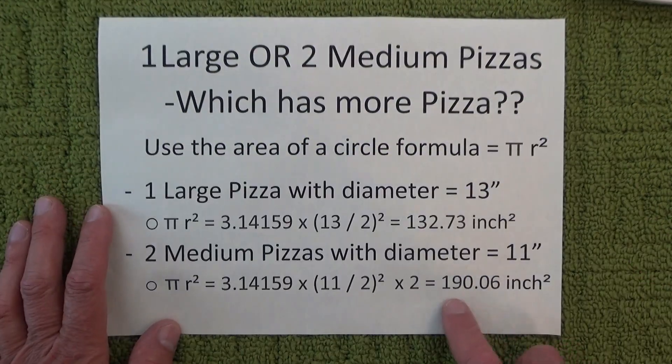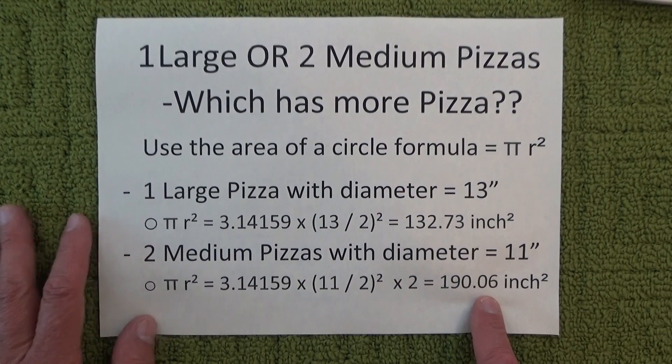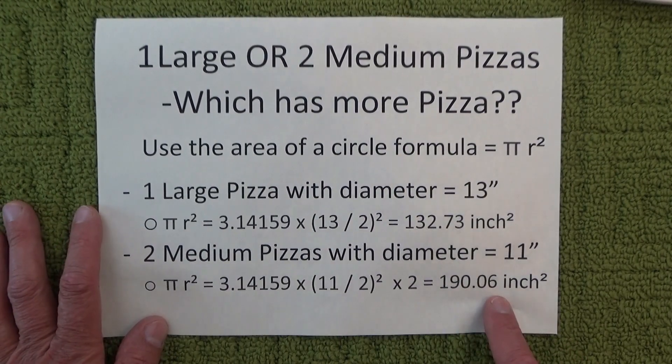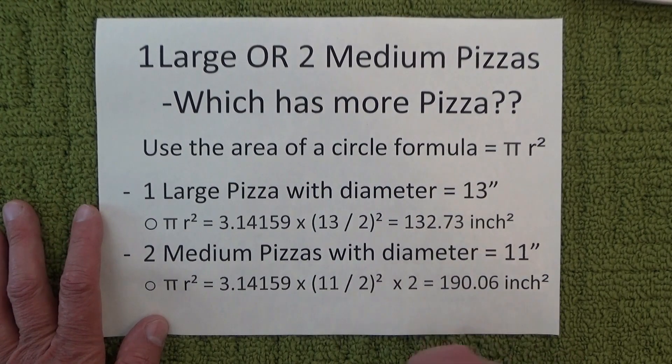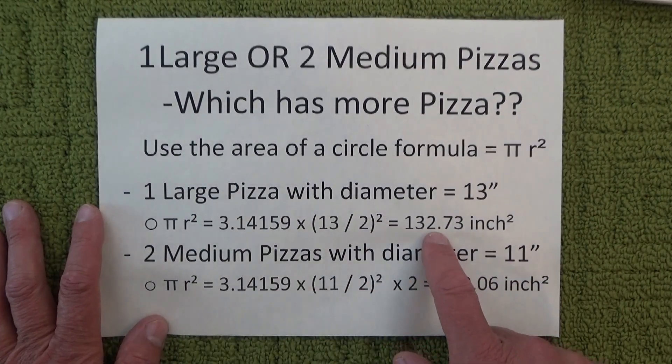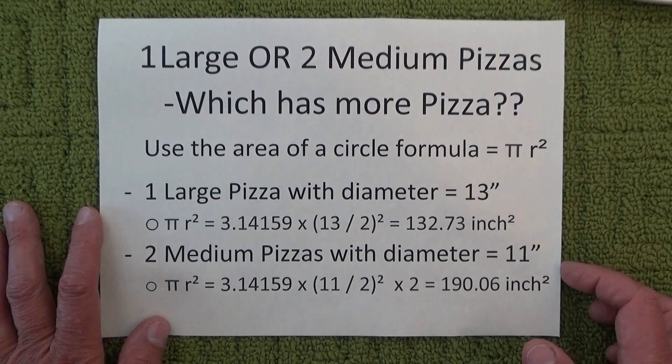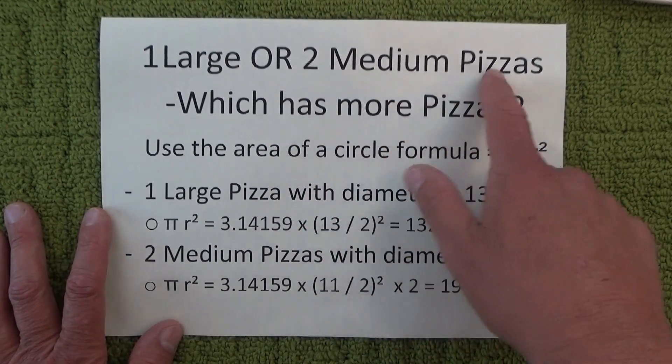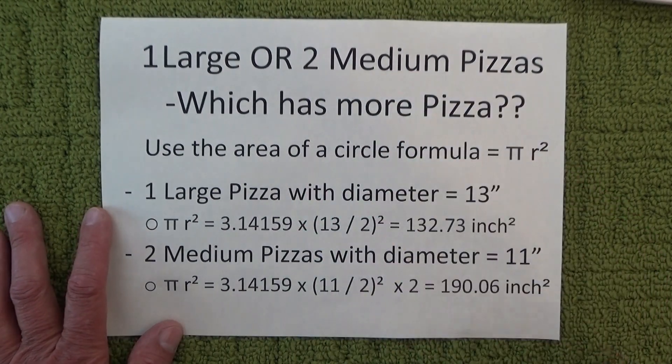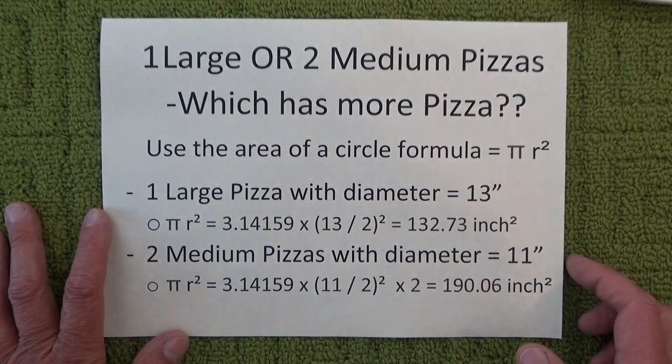So therefore, with two medium pizzas you get 190 square inches of pizza, while with one large pizza you only end up with 132 square inches of pizza. Therefore, two medium pizzas will give you more pizza than one large pizza.